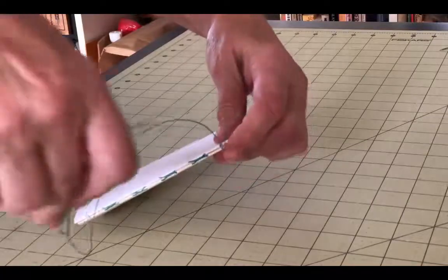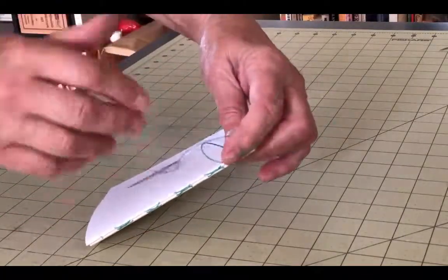First loop the long thread around the original thread tail and then sew in through the first hole of Signature 3.